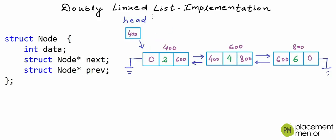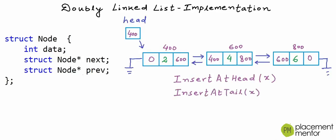Quite often we name this pointer variable head. In my implementation, I am going to write these functions: a function to insert a node at the beginning or head of the linked list, which will take an integer as argument; another function to insert a node at the tail; one function to print elements while traversing from head to tail; and another to print elements in reverse order while traversing from tail to head. The reverse print function will validate whether the reverse link for each node is created properly.